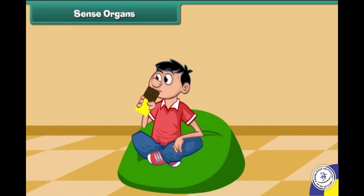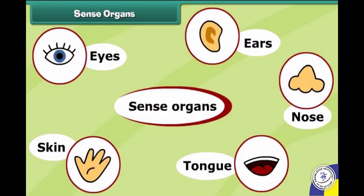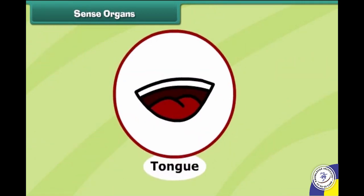We all like to eat chocolate because it's good in taste. But which sense organ is responsible for it? That organ is our tongue, which is helpful to chew, swallow, talk and sing. We can also taste various foods with the help of our tongue.